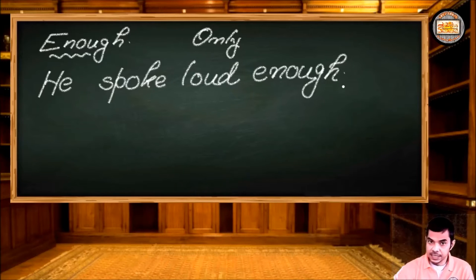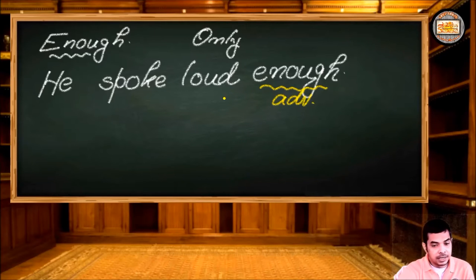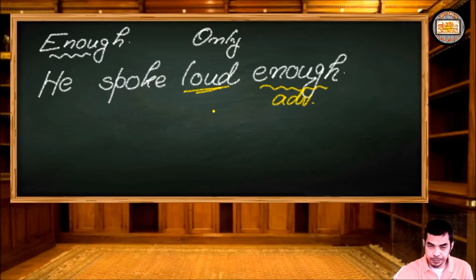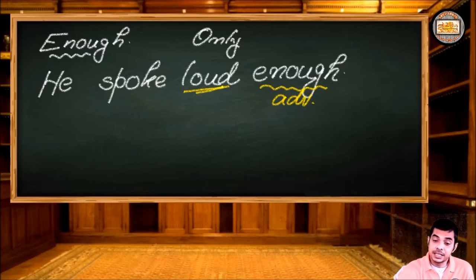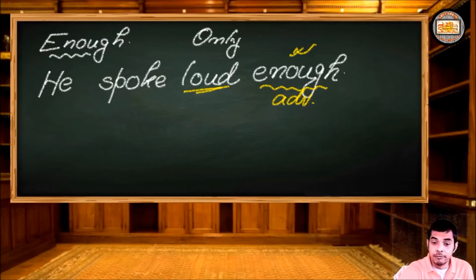Consider this sentence: 'He spoke loud enough.' Here, 'enough' is an adverb and it modifies 'loud.' Normally, if we say 'He spoke very loudly,' there is no confusion because 'very' is placed before the word it modifies. But with 'enough,' it is placed after 'loud' — the word it modifies. This is the special case: when we use 'enough,' we place it after the adjective or adverb it modifies.